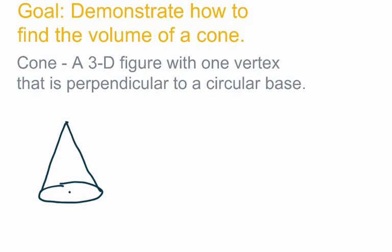The volume formula for a cone is very similar to the volume for a cylinder. If you take a cone and a cylinder with the same radius for the base and the same height, the volume of a cone will be one-third that of the volume of a cylinder. So the formula is V equals one-third times pi R squared H.